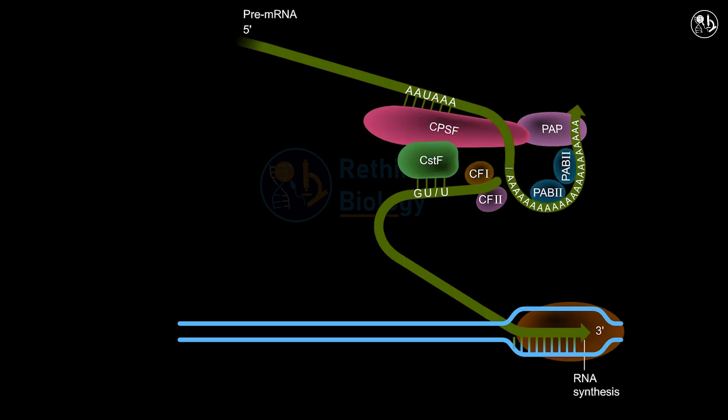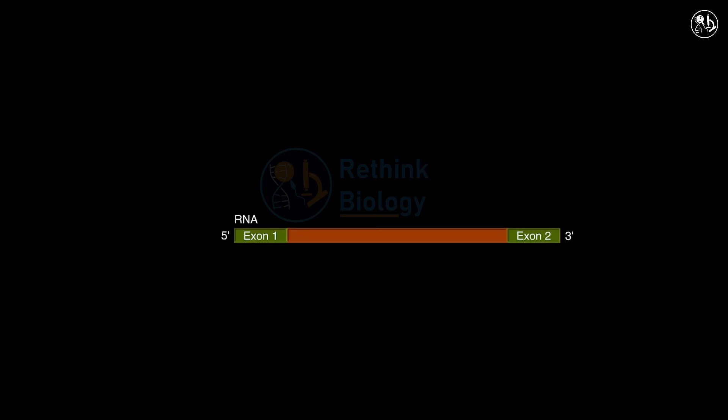The pre-mRNA transcript also contains non-coding sequences called introns, which are interspersed with the coding sequences called exons. The introns need to be removed from the pre-mRNA. This is called splicing.